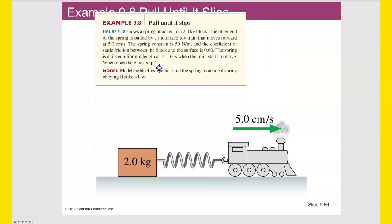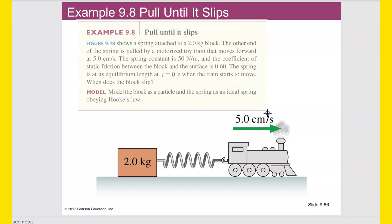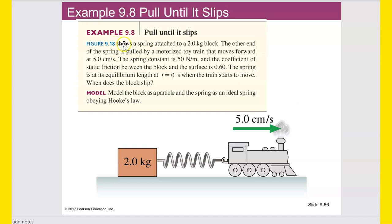Example 9.8: A spring is attached to a 2 kg block. The other end of the spring is pulled by a motorized toy train moving forward at 5 centimeters per second. The spring constant is 50 newtons per meter, and the coefficient of static friction between the block and the surface is 0.6. The spring is at its equilibrium length at t equals 0 when the train starts to move. When does the block slip? The block slips when the spring force exceeds the friction force opposing it.